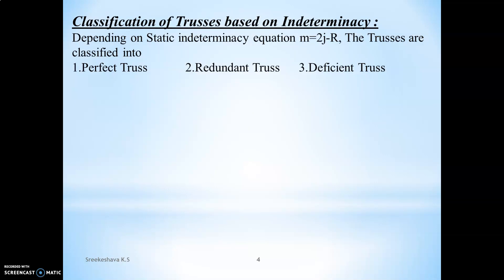Next is the classification of trusses based on indeterminacy. This classification is based mainly on the indeterminacy equation we have already studied: m minus 2j plus r, or m equals 2j minus r. This is the static indeterminacy equation for a truss. Based on this equation, the truss can be classified.